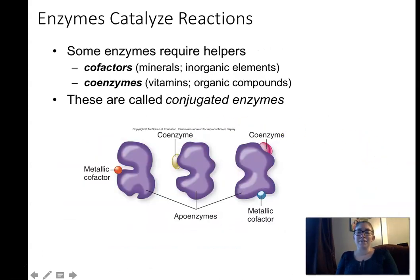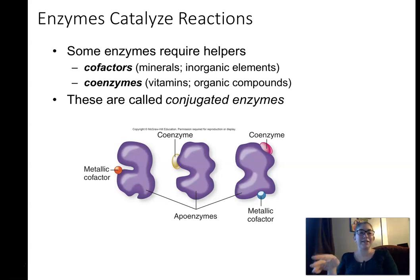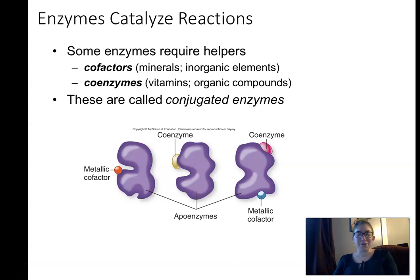Enzymes often require a sidekick to help them function or bind to substrate. Most enzymes require a cofactor or a coenzyme. The difference between them is chemical: cofactors are minerals — ions like iron, nickel, or zinc — whereas coenzymes are small organic molecules, which we tend to call vitamins. So coenzymes are vitamins, and cofactors are minerals.